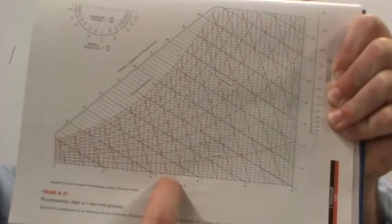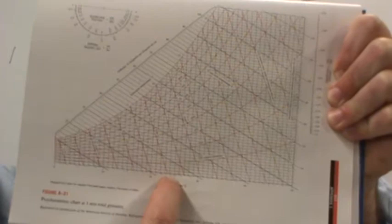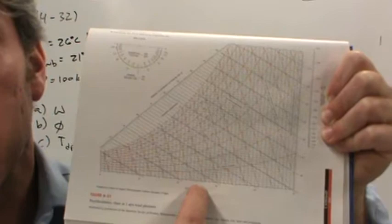So in the center, between 25 and 30, is sort of an extended tick mark. So if we go one more, that's 26 degrees. And that's our dry bulb temperature. That indicates a vertical line on this graph.